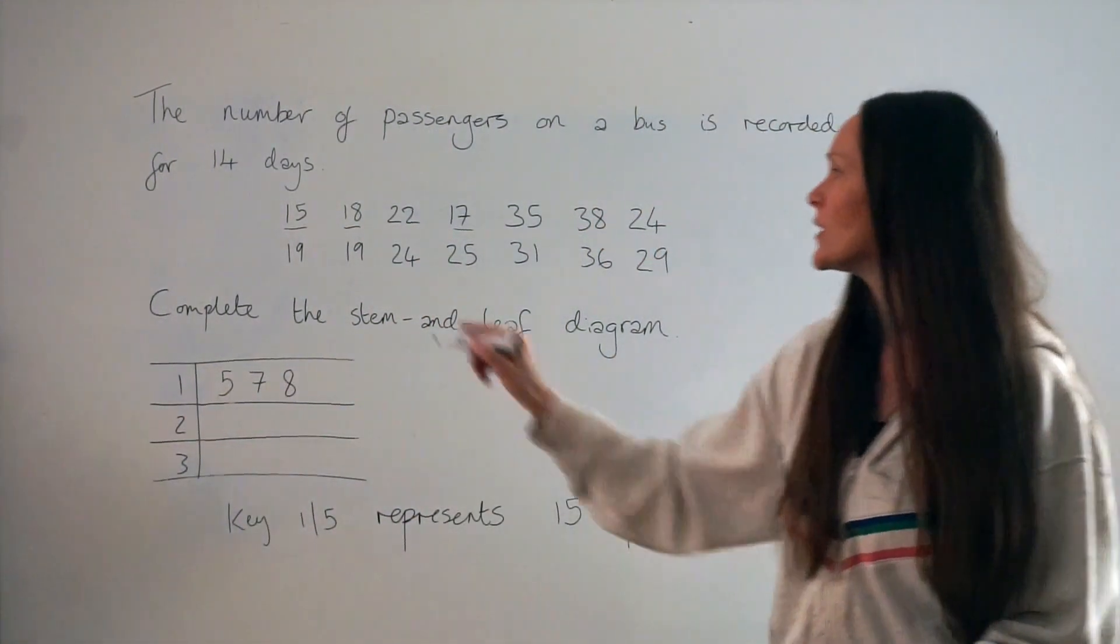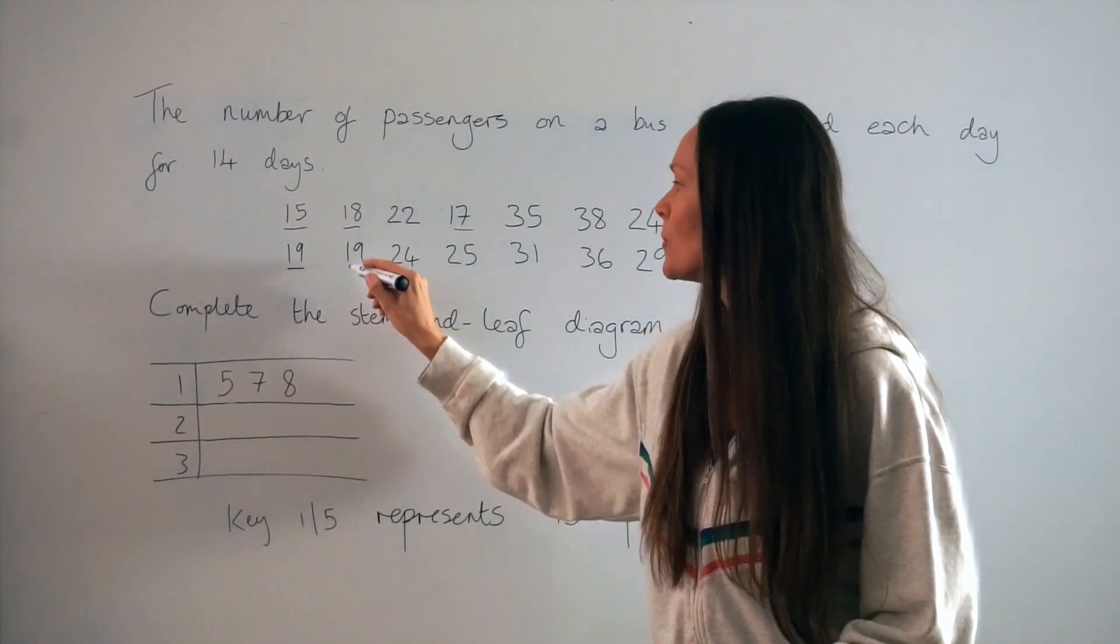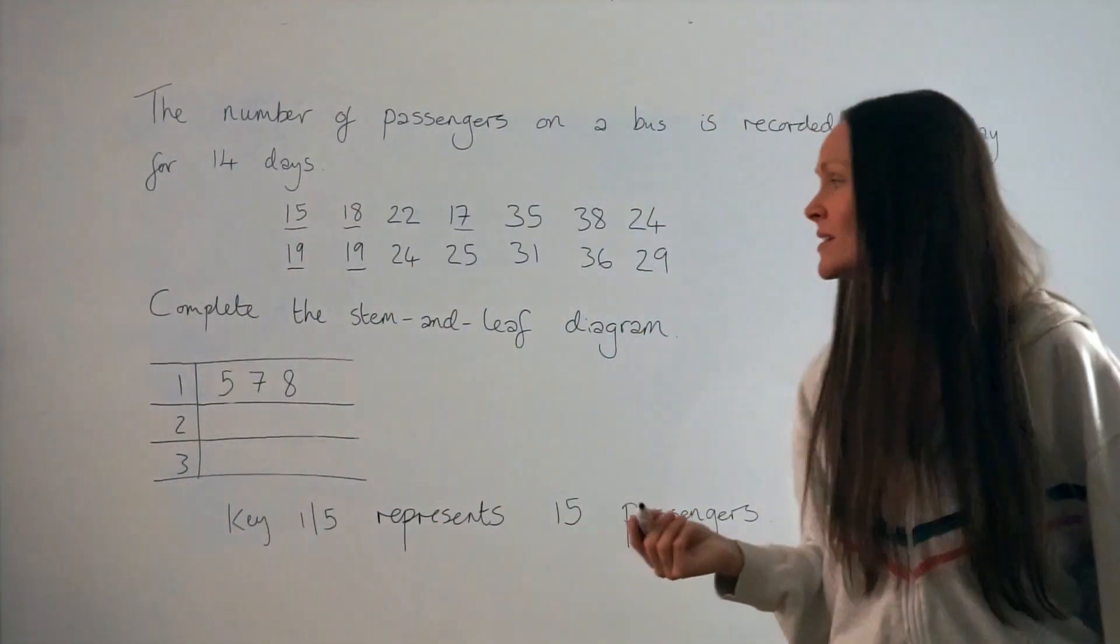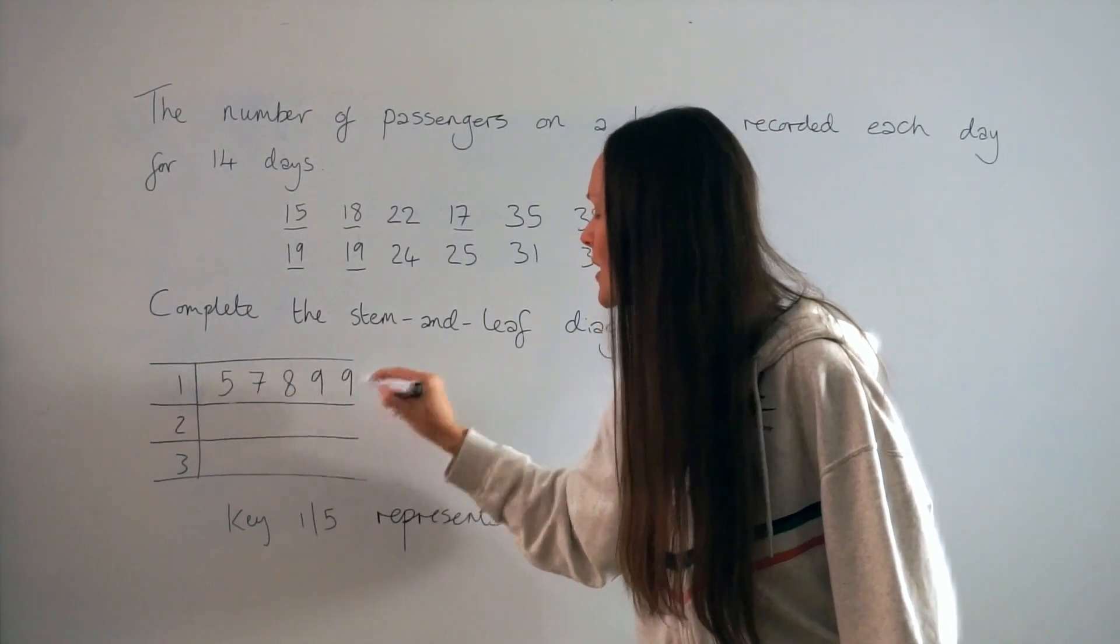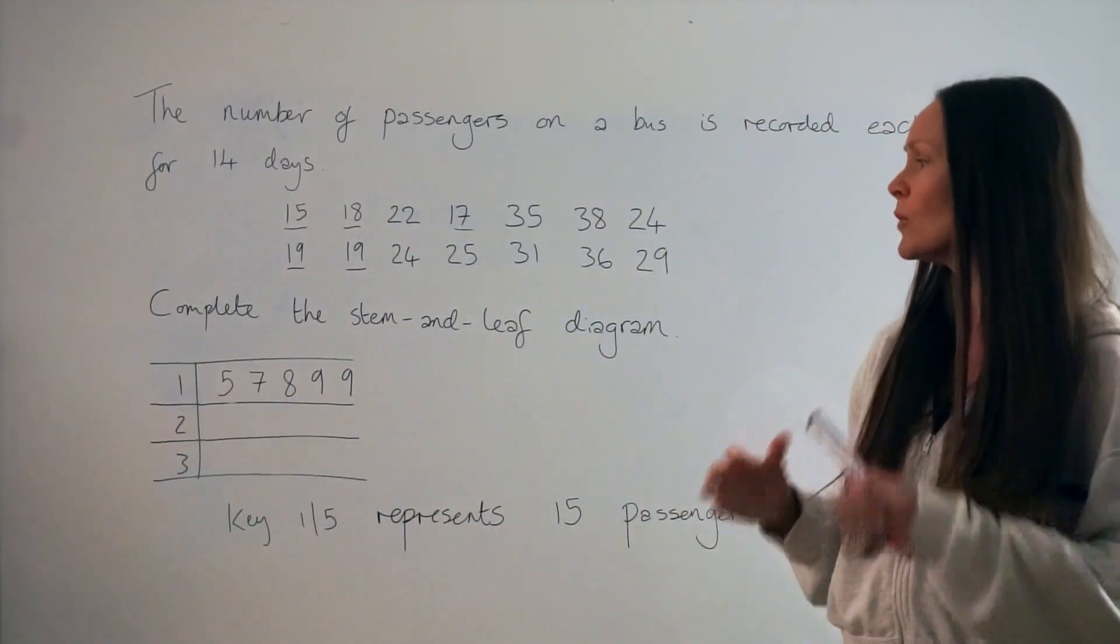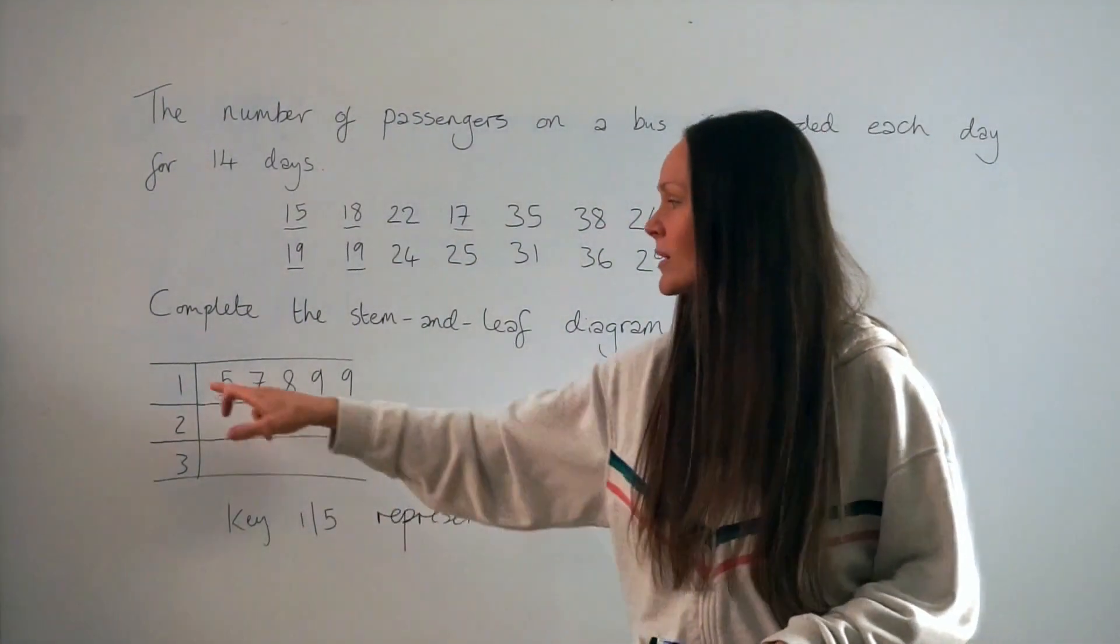And then we have the number 19. And be careful because there are two number 19s, so I have to write down the number 9 twice. So that's all the numbers from above that begin with the number 1.